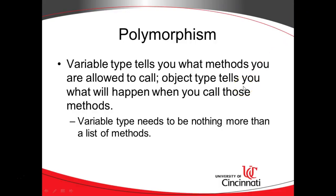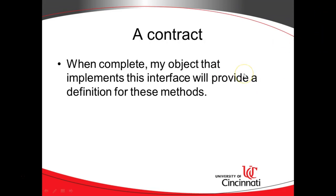Going back to polymorphism, we realize the object type telling you what will happen when you call those methods gives us quite a bit of flexibility and extensibility, especially for writing software that will be extended by others. A contract is really valuable when it's between team members — I might be the UI person, Joe Bloggs might be the DAO person. The contract is how I know what I can call on Joe Bloggs, and what Joe Bloggs knows he needs to furnish to me.